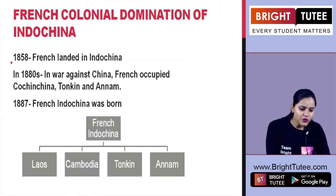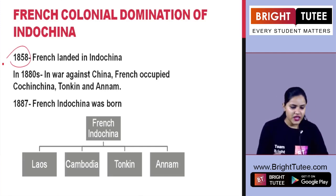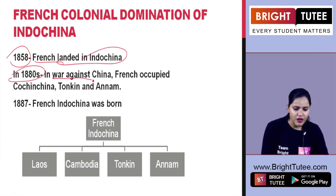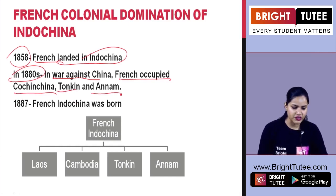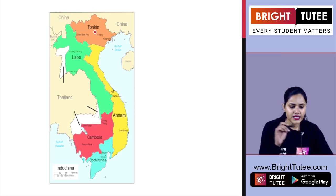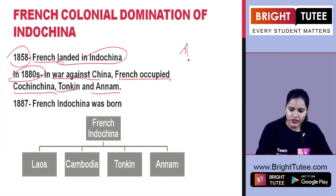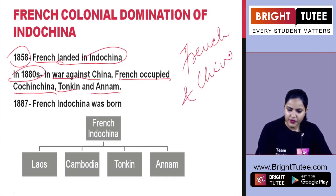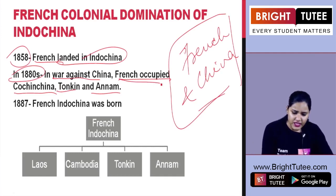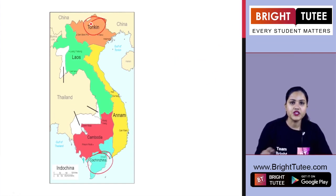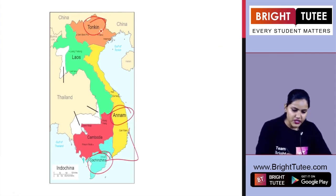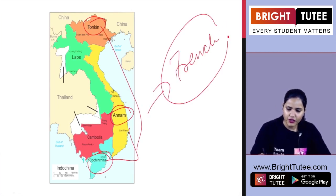It was in the year 1858 that the French finally landed in Indochina. Also in the early 1880s, there was a war against China in which the French occupied Cochin China, Tonkin, and Annam. Looking at the map, we can see these three regions — Cochin China, Tonkin, and Annam — all occupied by the French.